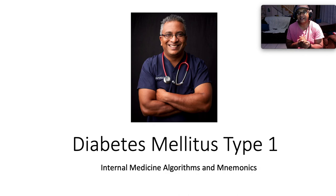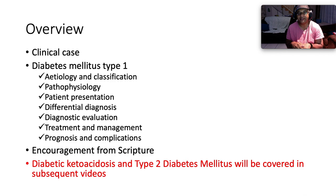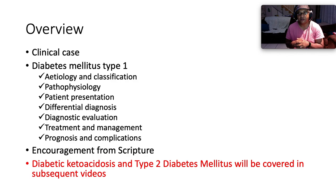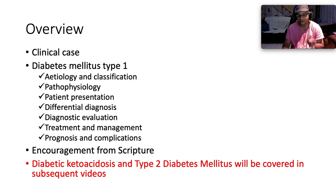Hello everybody, it's Ryan here. I hope you and your family are well. Today we're tackling a problem in society — diabetes — but we are focusing on type 1 diabetes. Here's a breakdown of what we're going to cover: a clinical question, etiology and classification, pathophysiology, signs and symptoms, differential diagnosis, diagnostic evaluation, treatment and management, prognosis and complications, and encouragement from the Word of God. Note that diabetic ketoacidosis and type 2 diabetes will be covered in a subsequent video.